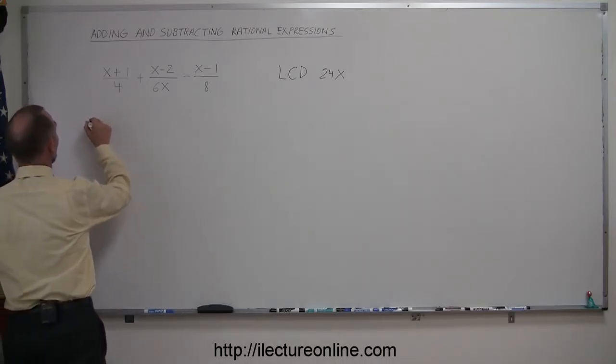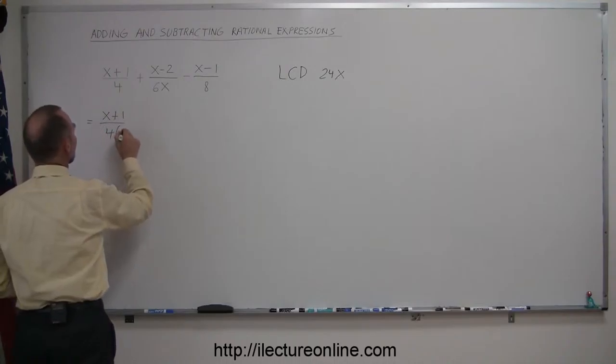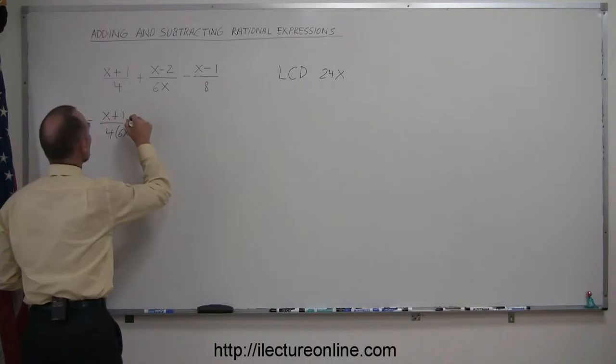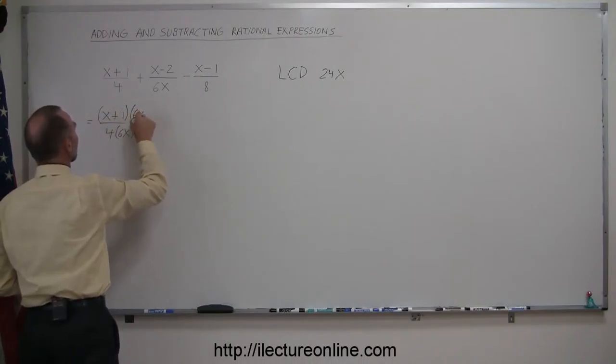So this now becomes x plus 1 over 4, since we're multiplying the denominator by 6x, and of course 6x times 4 is 24x, we must also multiply the numerator by 6x.